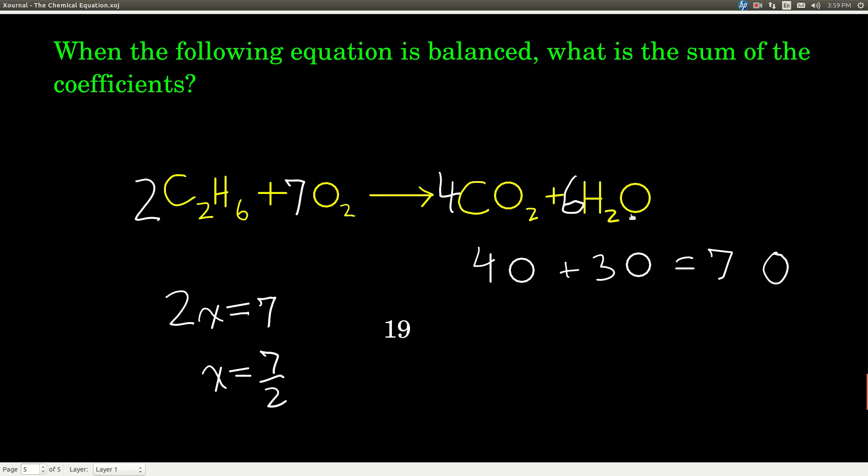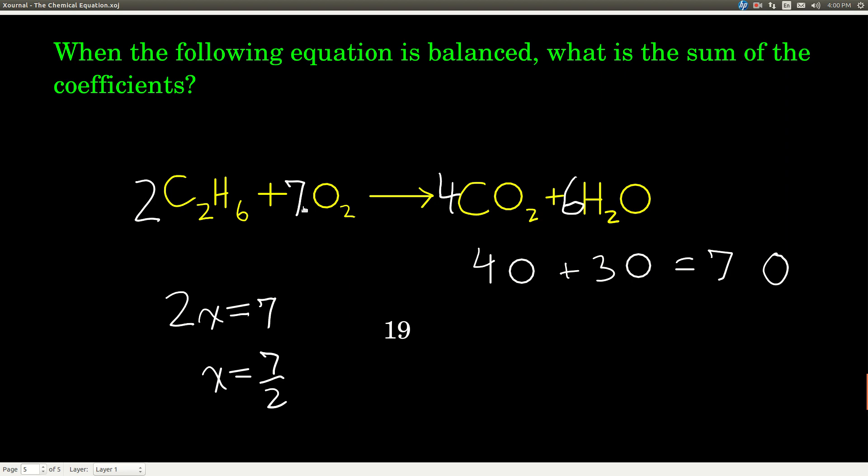Everything's balanced. Now, smallest set, this is the smallest set of whole numbers. Now, this would look like it's balanced if we had, like, a four, a 14, an eight, and a 12. But those would not be the smallest set. We could divide all those by two. If there's a common divisor greater than one, you have to reduce the coefficients so that you have the smallest set of whole numbers.